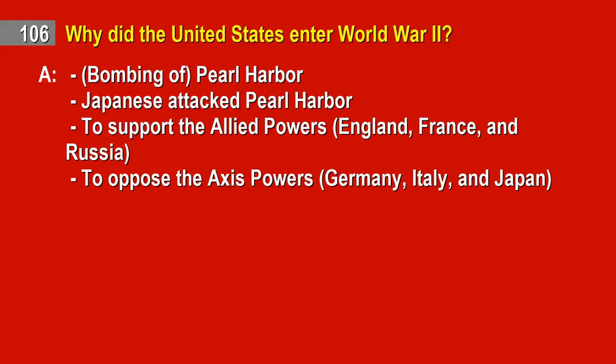Question 106. Why did the United States enter World War II? Answer: Bombing of Pearl Harbor. Japanese attacked Pearl Harbor. To support the Allied Powers — England, France, and Russia. To oppose the Axis Powers — Germany, Italy, and Japan.